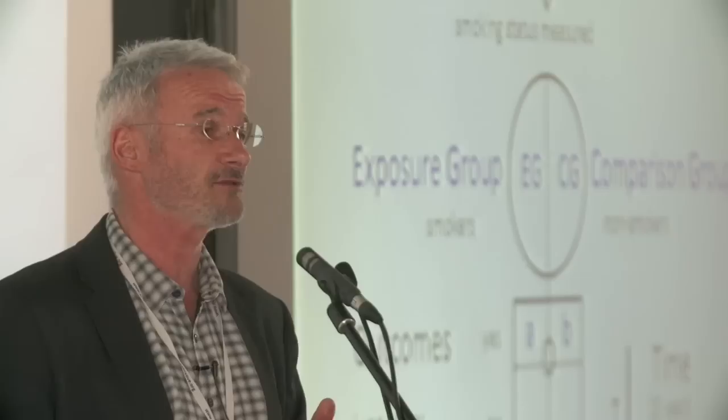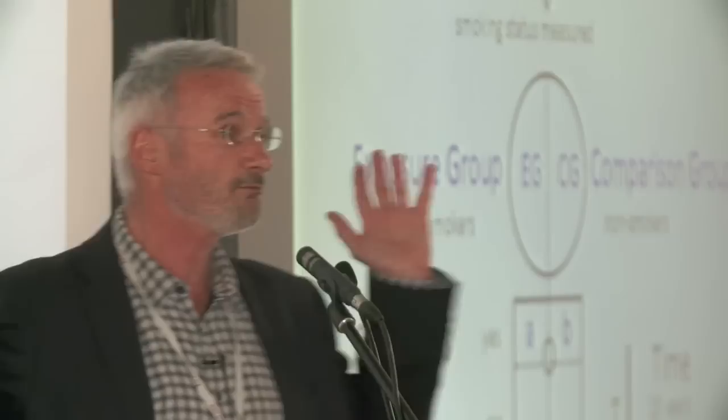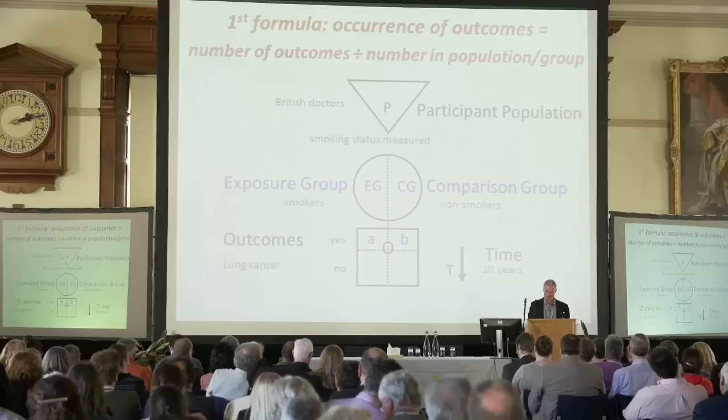Epidemiology, by definition, is about uncertainty — it's about probabilities. Unless the probability is 0% or 100%, which is certainty, everything else in epidemiology is about uncertainty. A lot of basic biomedical science is reductionist and about certainty. My science is not about certainty — it's all about uncertainty. So it's the perfect science for medicine. It's the basic science of medicine.